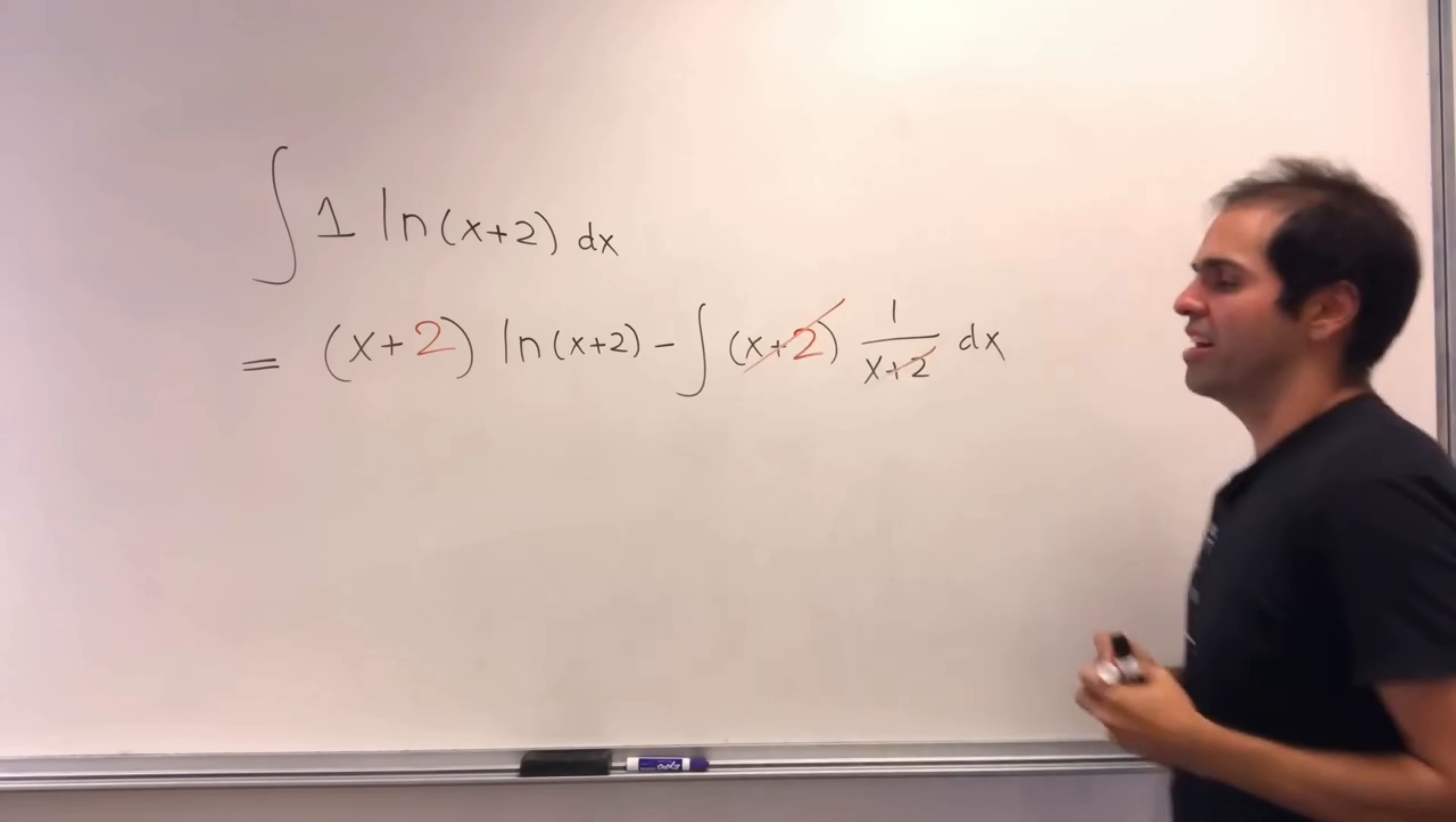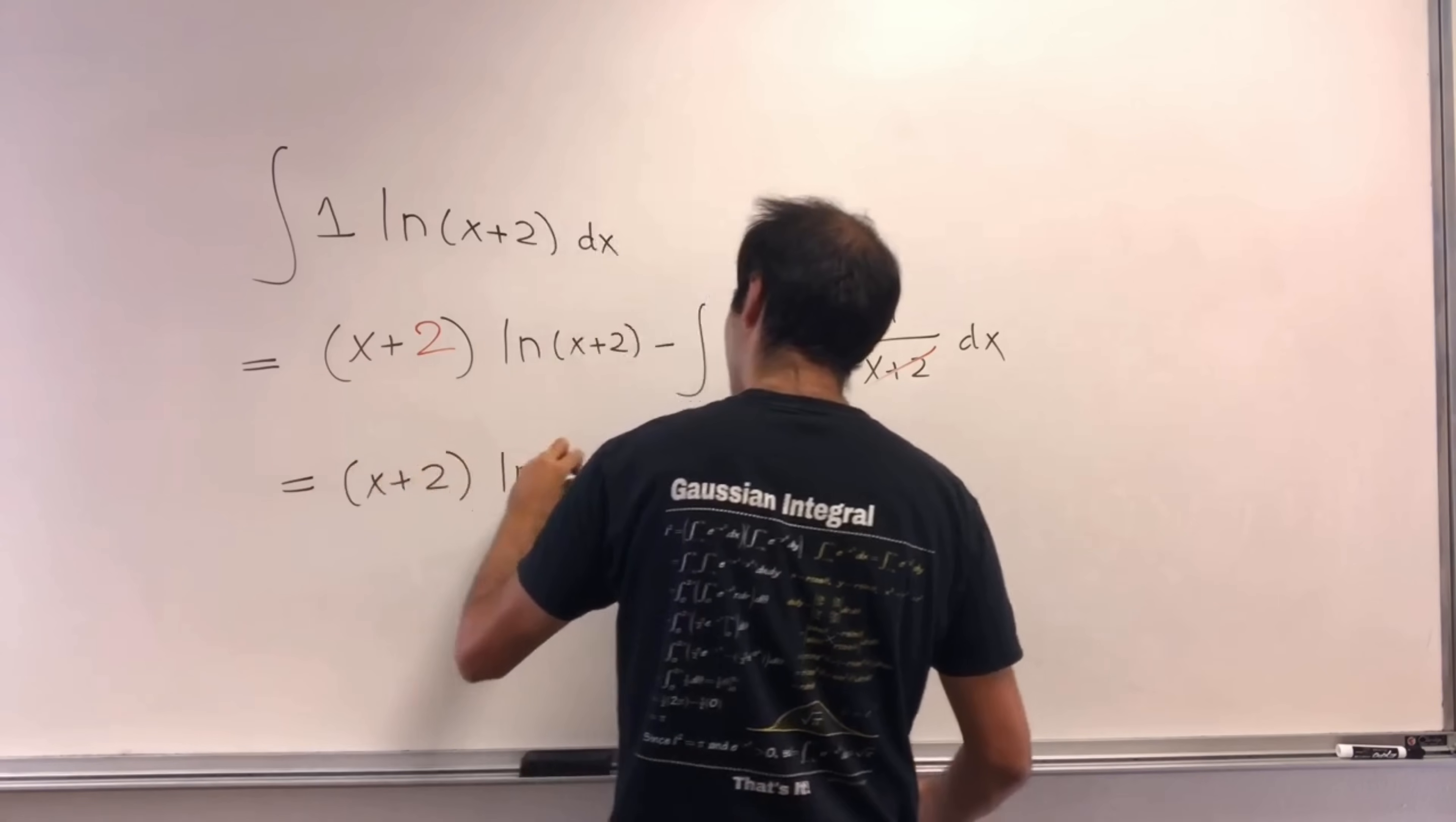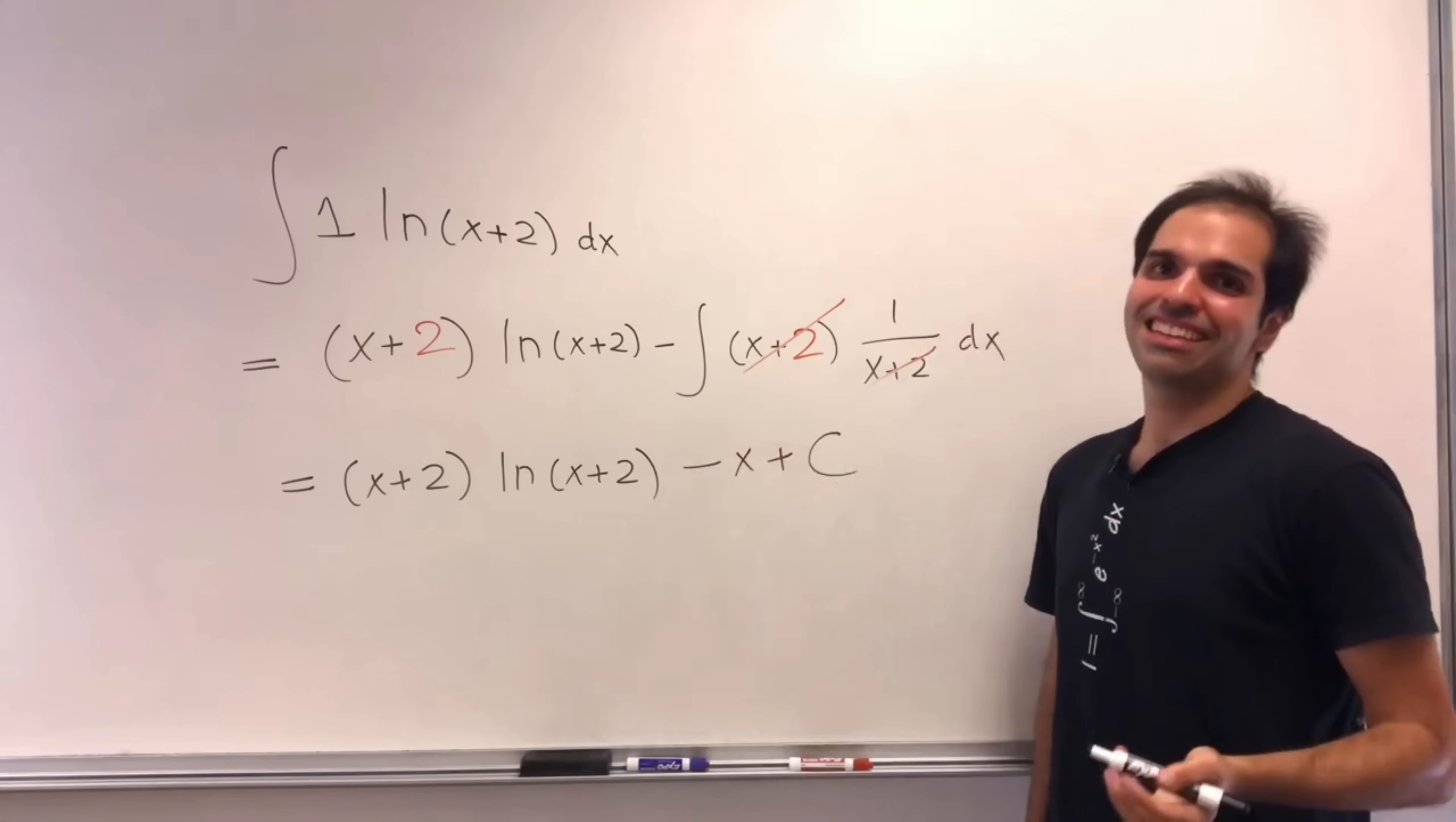And then, boom, boom, this cancels out, and you're left with x plus 2 ln of x plus 2 minus integral of 1, so minus x plus a constant. Isn't that nice?